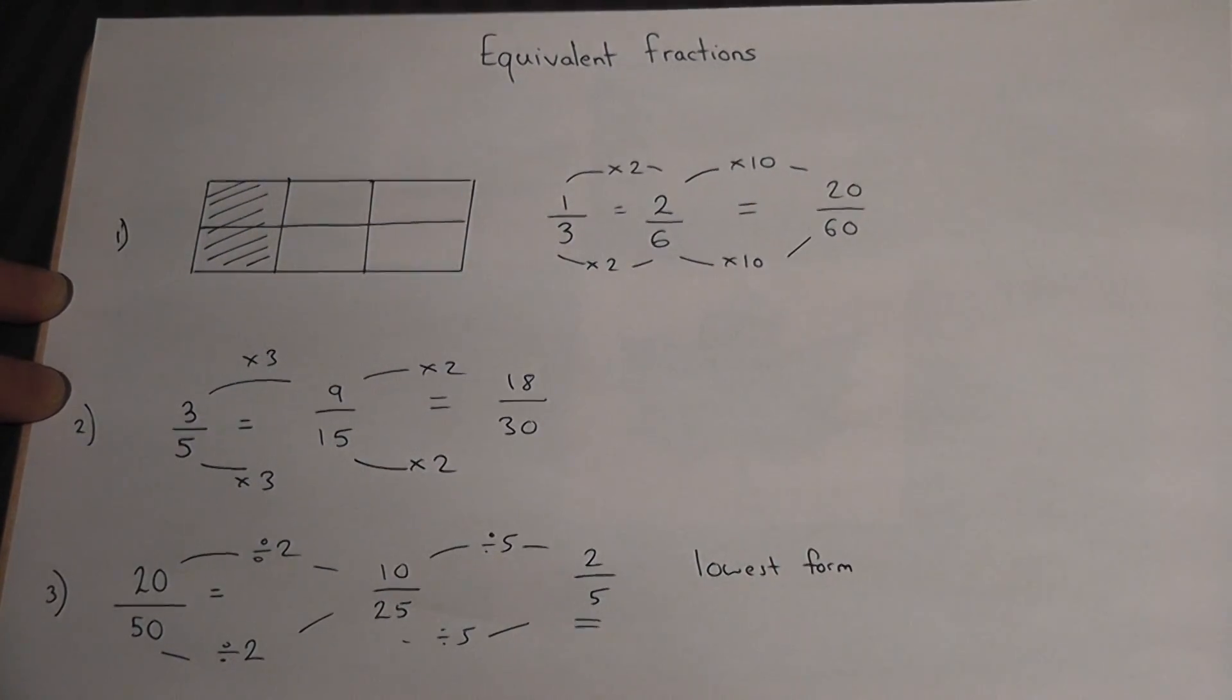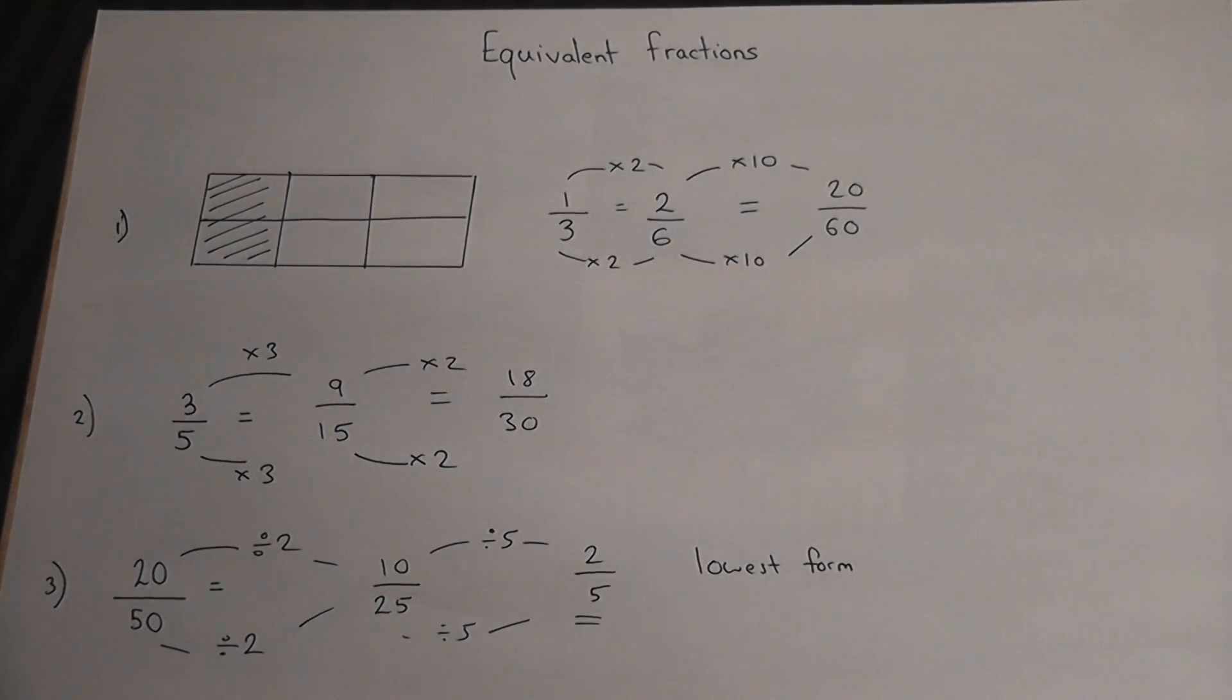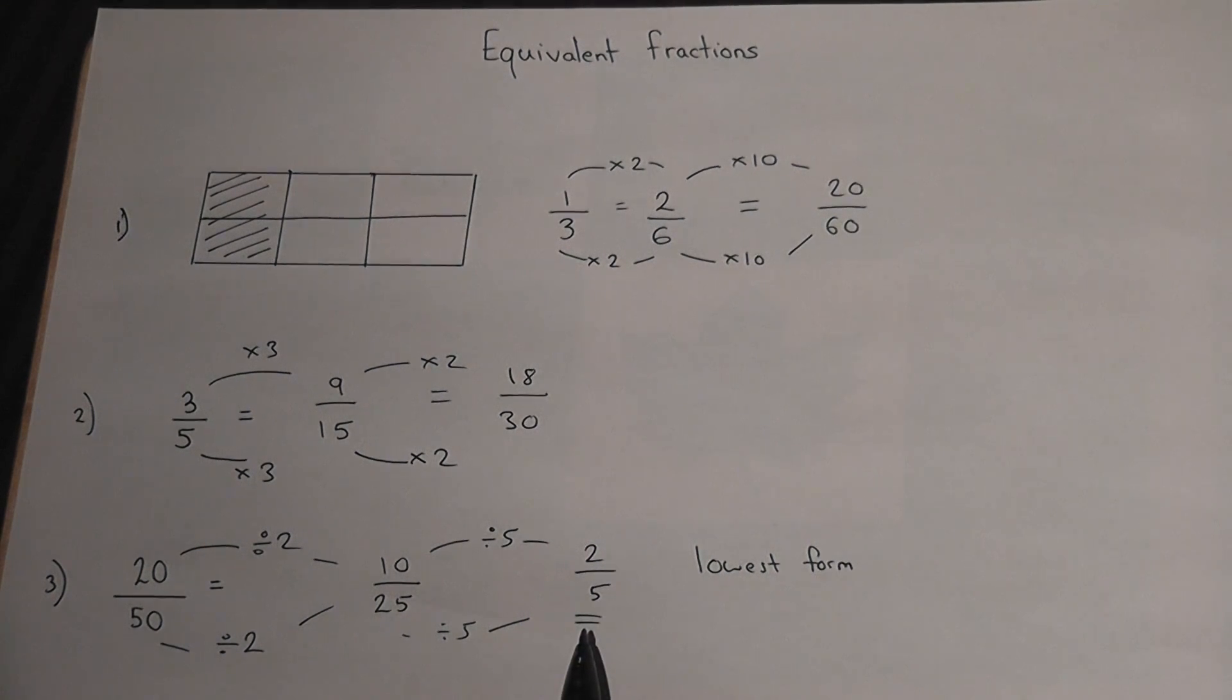The reason being I cannot divide by any other number without achieving decimals. So to summarize, we can times or divide a fraction by any number we like and they are still the same fraction. However, if you divide a fraction down into its lowest form, then it is the fraction in its simplest form.